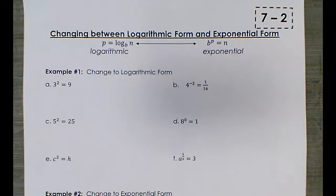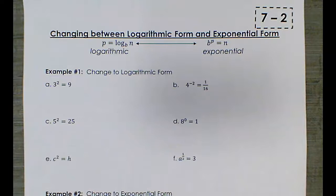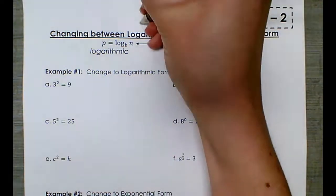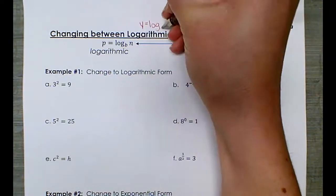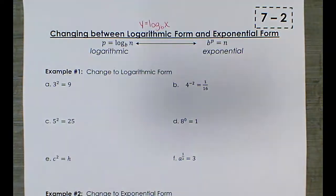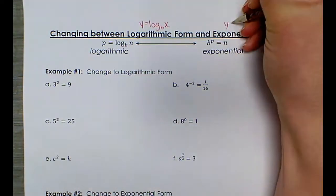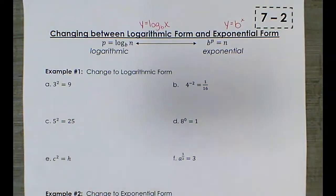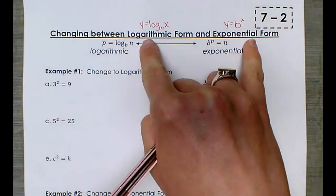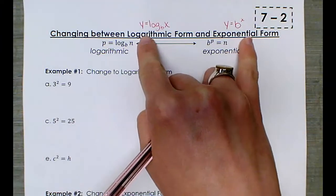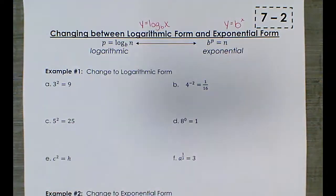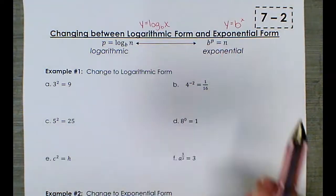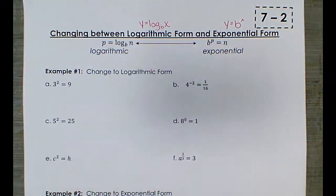Hi folks, today we're going to be changing between logarithmic form — which you were just introduced to in the last lesson when we talked about logarithmic parent functions — and exponential form. The logarithmic parent function is y equals log base b of x, and the exponential parent function is y equals b to the power of x. These are inverses of each other, as long as their bases are the same. Today we're going to learn how to switch between the two.